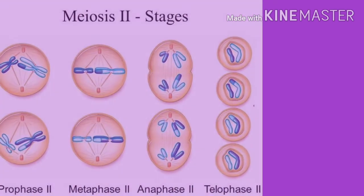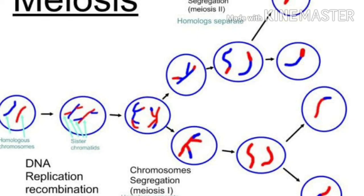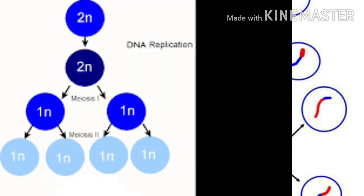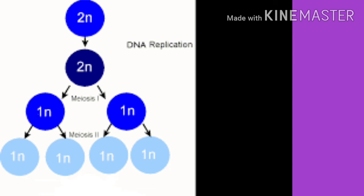Coming to meiosis 2: meiosis 2 is similar to mitosis. Meiosis 2 separates the chromatids, producing two daughter cells each with 23 chromosomes, where each chromosome has only one chromatid. The number of chromosomes is reduced from 46 to 23 during meiosis. Because they have only half the total chromosomes of a somatic cell, they are termed haploid. In a human egg or sperm there are 23 chromosomes, one of which is an X or Y.